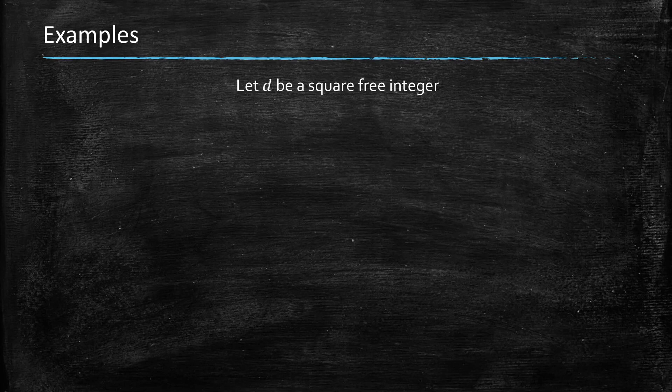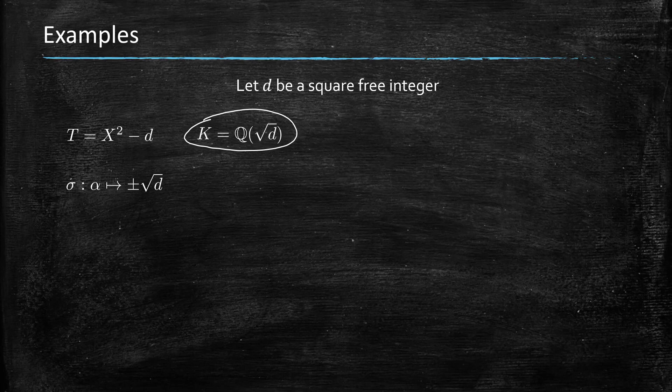Our simplest number fields are the quadratic ones. So let's assume d is a square-free integer. Then we'll have T equals X squared minus d is an irreducible polynomial, and it defines a number field K which is equal to Q of square root of d, where square root of d is an element whose square equals d, and the embeddings here are plus or minus square root of d, which correspond to the two roots.